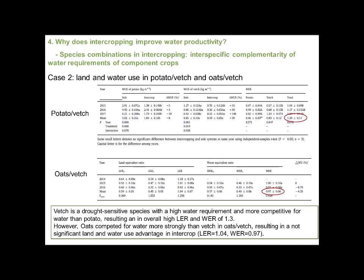Similarly, in crop-vetch intercropping, vetch has a high water requirement and is more competitive for water than potatoes, resulting in a high land and water equivalent ratio. However, oats competed for water more strongly than vetch, resulting in no significantly significant water and land use advantage in that intercropping system.